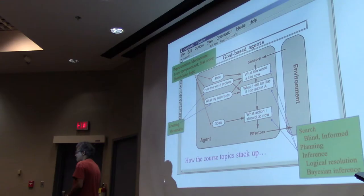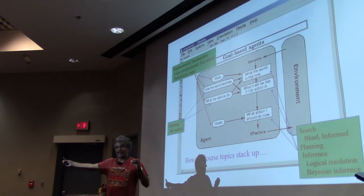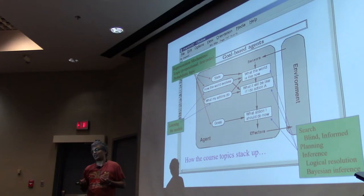Even in search you can do blind versus informed search — those are the first topics after this point. The very first project will involve doing blind search as well as A* search. And if you know more interesting representations of the world, even the search algorithms can exploit that structure.